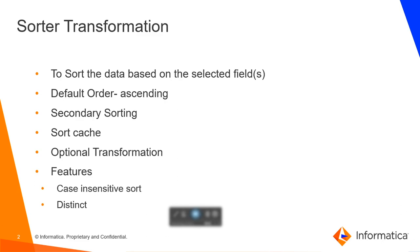Sorted transformation uses a cache and the space required is calculated automatically. The cache size and the cache directory can be configured under advanced properties. It is advised to have at least 16 MB of cache size. While working on large datasets, the cache directory can be configured to point to a mount with large space.